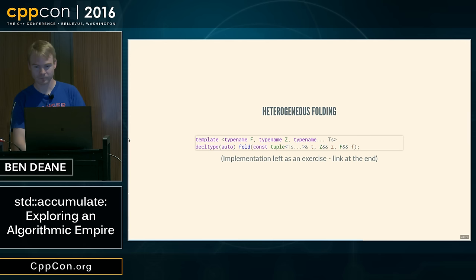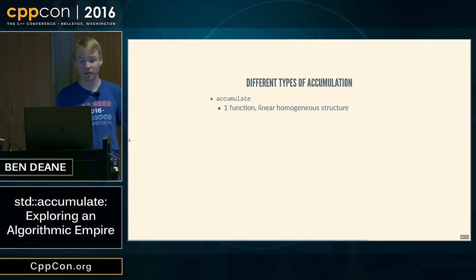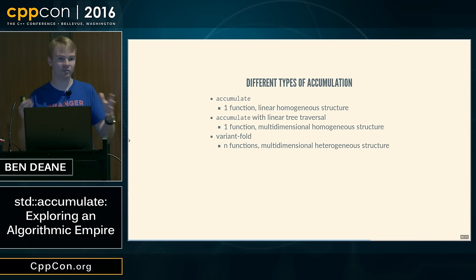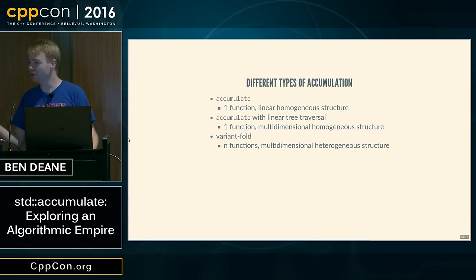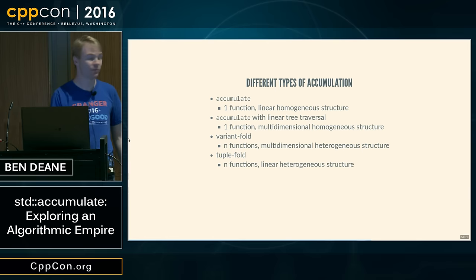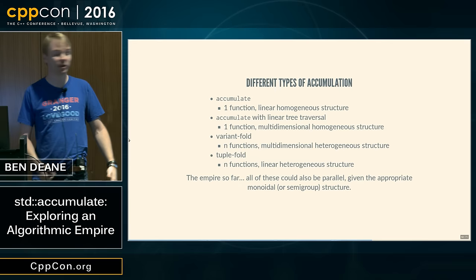So what we've seen so far: accumulate gives us one function and we accumulate over a linear homogeneous structure. If we do a linear tree traversal on a homogeneous tree structure, we get something very similar. If we accumulate over a variant, we need n functions to deal with the n possible values, but it allows us to accumulate multi-dimensional and heterogeneous structures. A tuple is itself a linear but heterogeneous structure, so again we have effectively n functions — possibly a function template like the ostream output. All of these could be parallelizable given the appropriate semi-group structure.